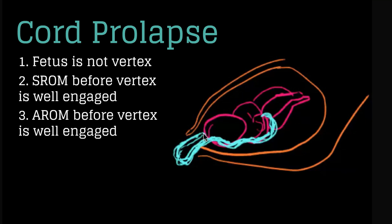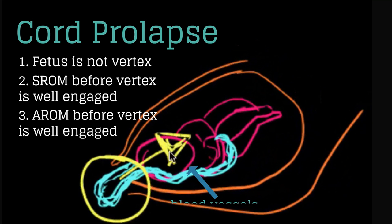Cord prolapse is an emergency for the blood vessels in the umbilical cord are compressed. When this is recognized the provider's hand must push the fetal head up so it does not further compress the cord and the cord needs to be manually reduced back into the uterine cavity and the patient needs to be brought back to the operating room for an immediate cesarean section. The hand needs to stay in place throughout this time until the baby is safely delivered.